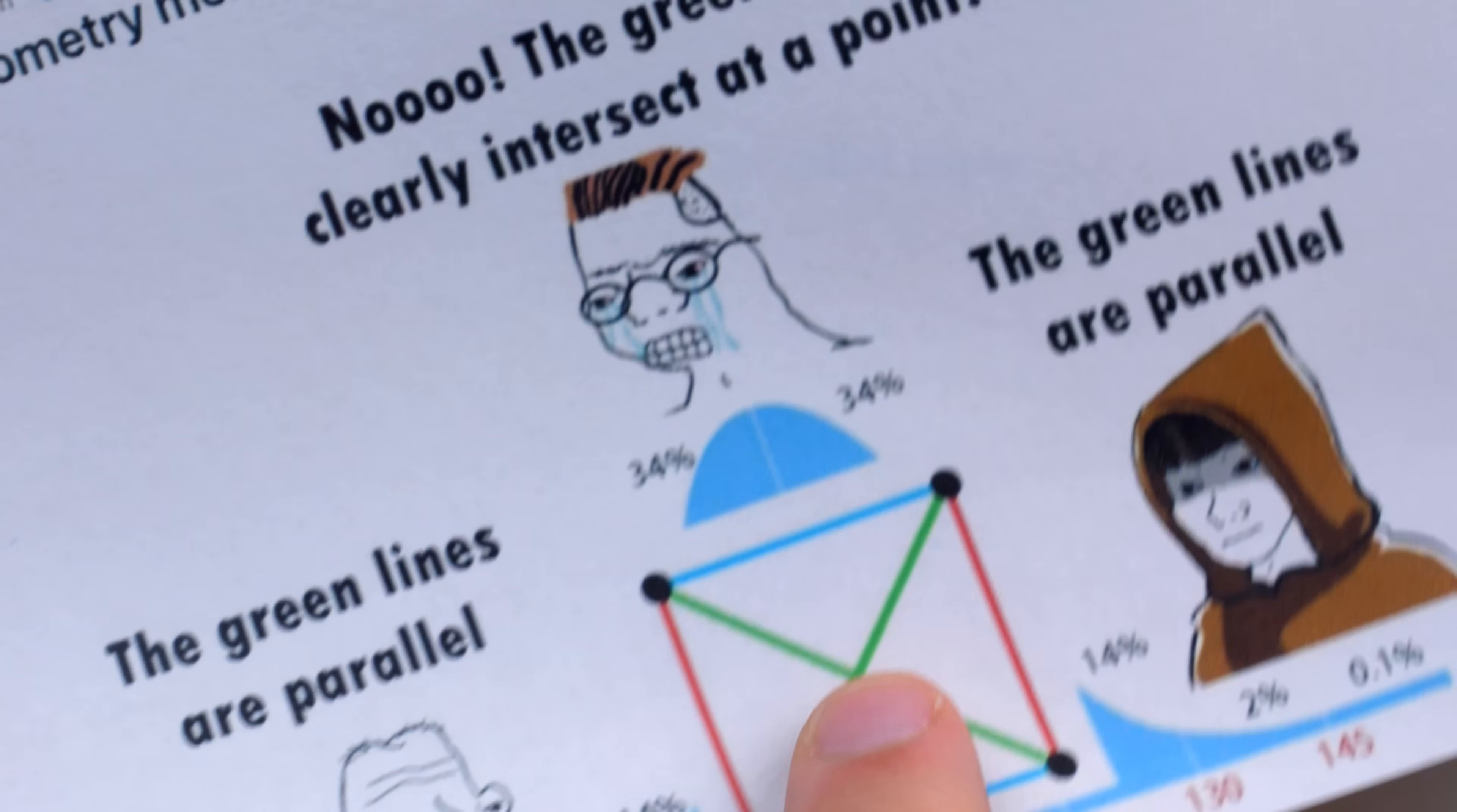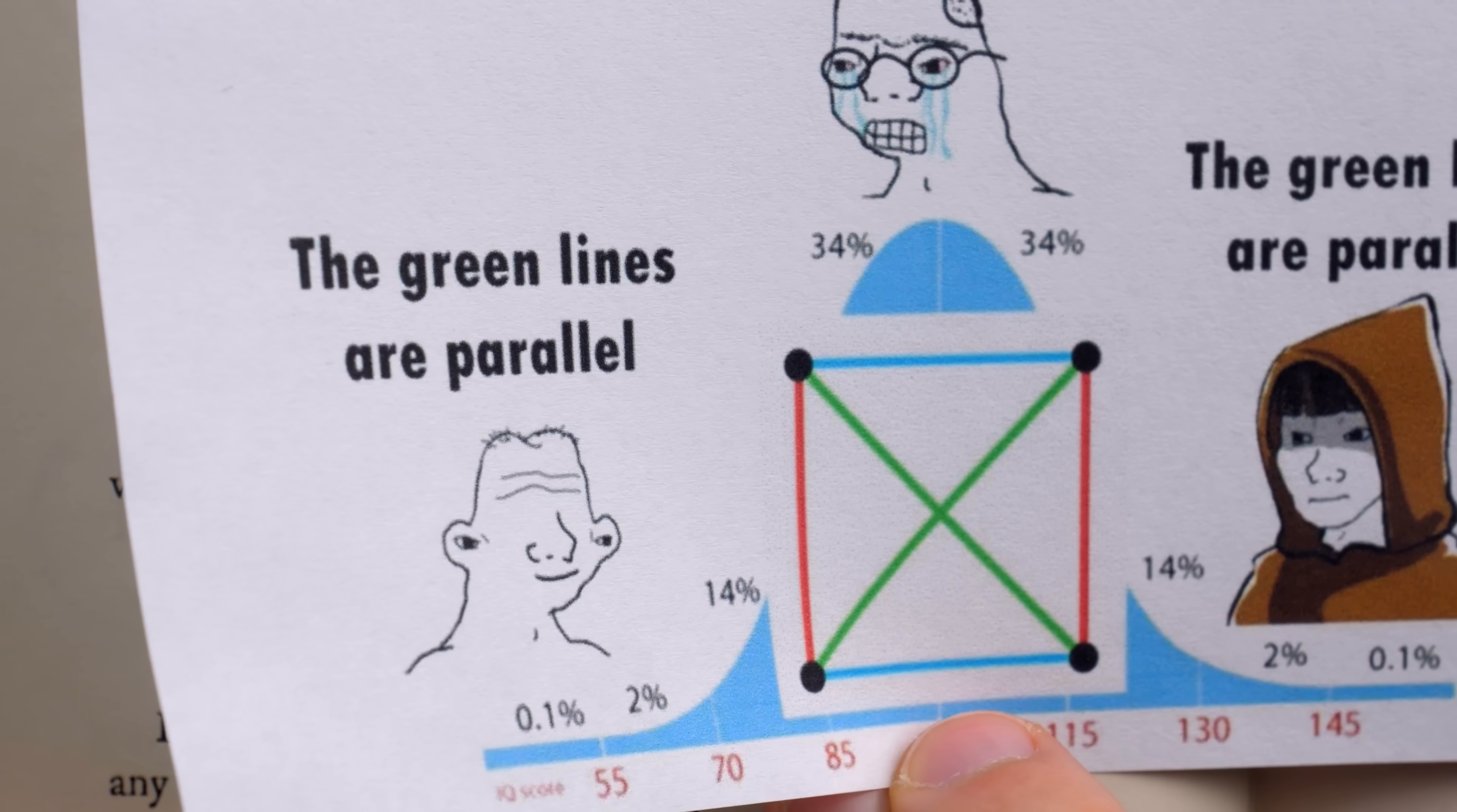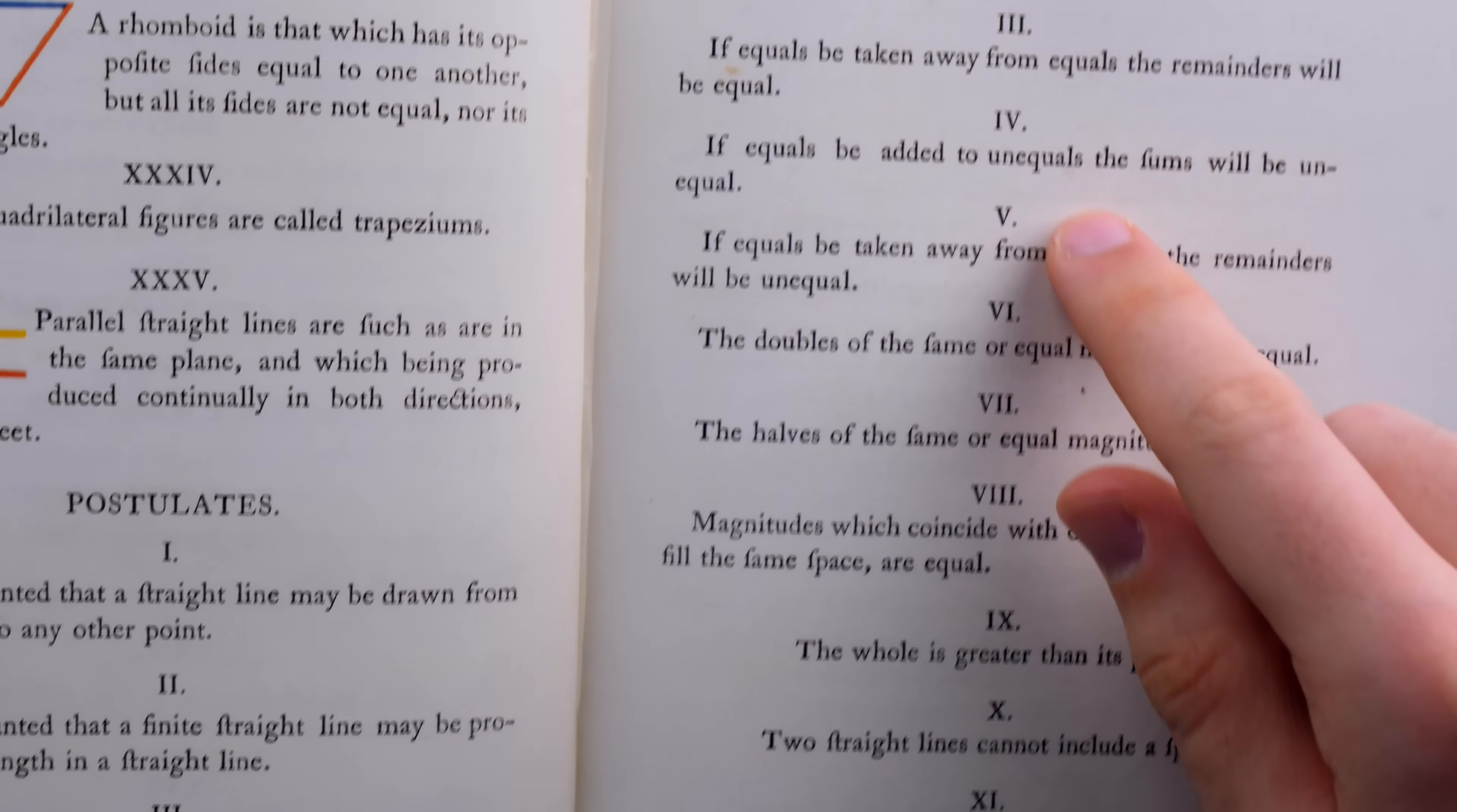A definition that the green lines from our meme certainly do not satisfy. They are in the same plane, but they absolutely meet. So just looking at the picture, from the Euclidean perspective, they would not be parallel. What really jumps out at us, if we look through the axioms, axiom 1, 2, 3, 4, 5, etc, is axiom 12.